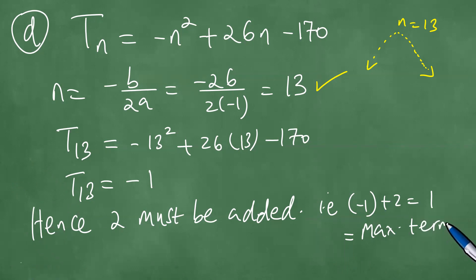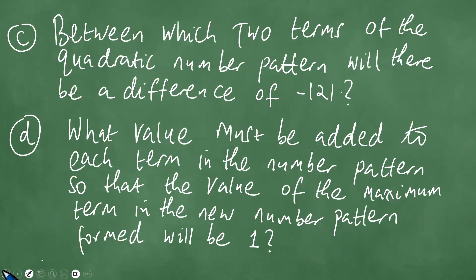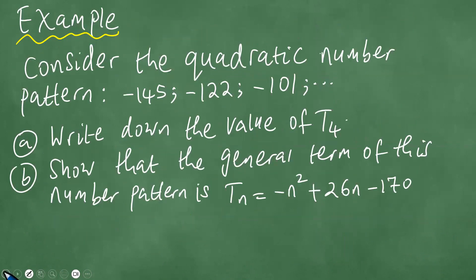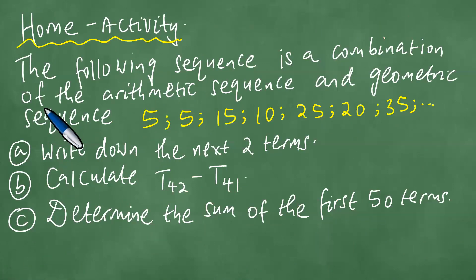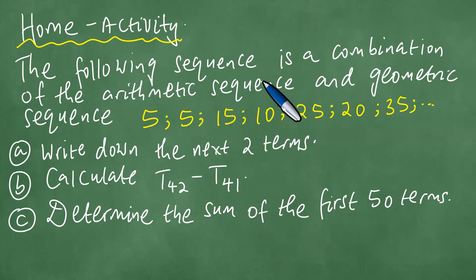To summarize the home activity: the following sequence is a combination of arithmetic and geometric sequences. Write down the next two terms, calculate t42 − t41, and determine the sum of the first 50 terms. Please try this and send me screenshots. Thank you, goodbye.